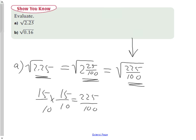So therefore, what is the square root of 2.25? It's 15 tenths, or 1 and 5 tenths, or 1 and a half, or more appropriately, 1.5.